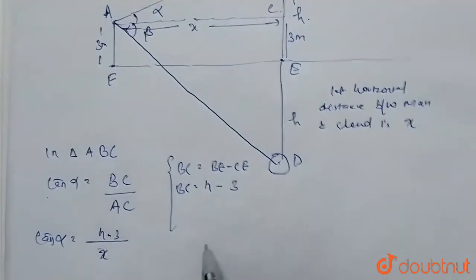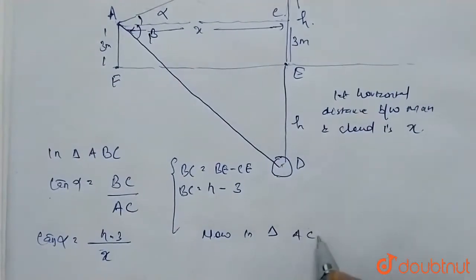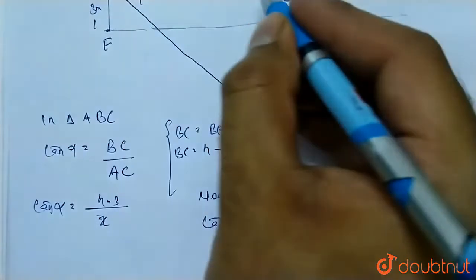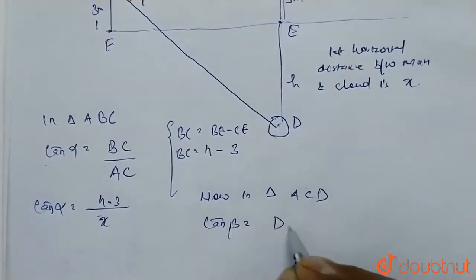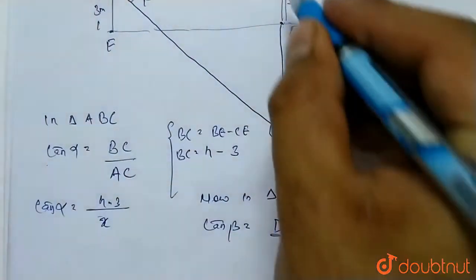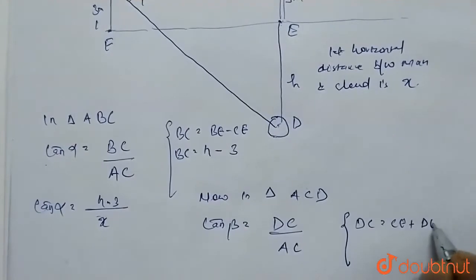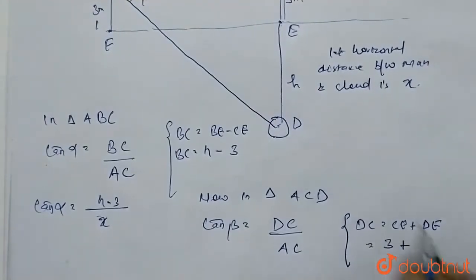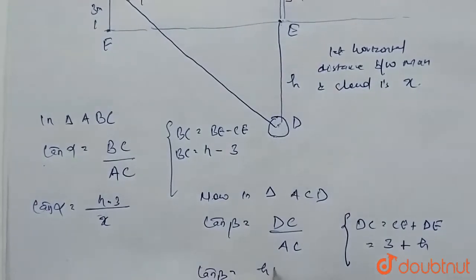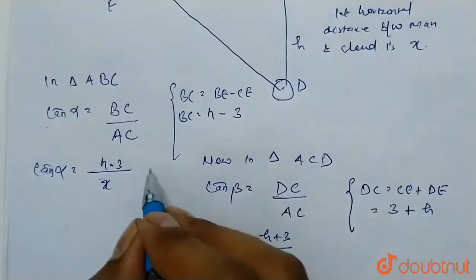In triangle ACD, find tan beta. Tan beta equals opposite over adjacent, which is DC over AC. DC equals CE plus ED: C is 3 and D is h, so DC equals h plus 3. AC is x. Therefore, tan beta equals (h plus 3) over x — call this equation 2.